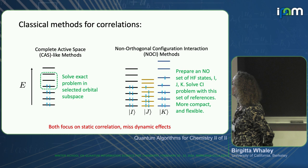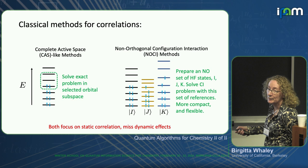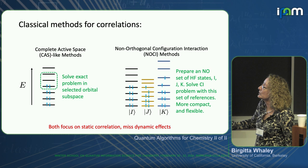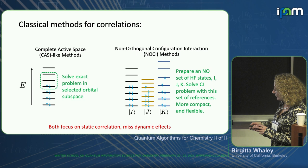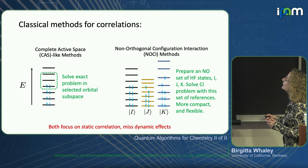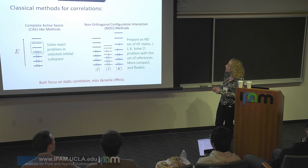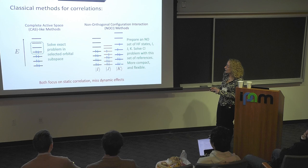For classical methods with an active space, you solve the exact problem in a selected orbital subspace — for example, you might freeze electrons in the lowest levels and focus on an energy band of interest. There are also non-orthogonal configuration interaction methods where one takes multiple configurations — different sets of energy levels with different orderings of the same electrons — representing different Hartree-Fock reference states corresponding to different electronic configurations in different regions of the molecule.